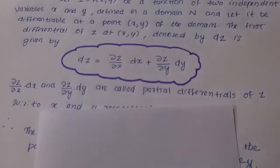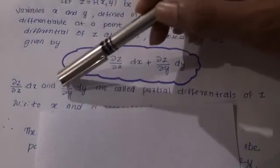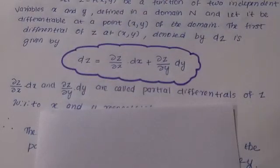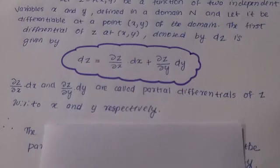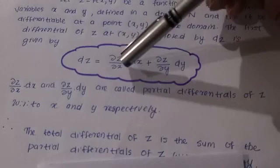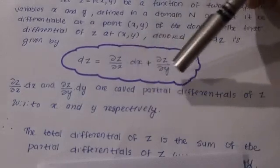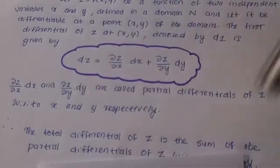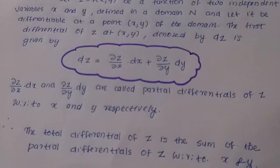(∂z/∂x)dx and (∂z/∂y)dy are called partial differentials of z with respect to x and y respectively. The total differential of z is the sum of the partial differentials of z with respect to x and y.